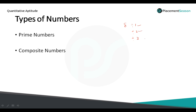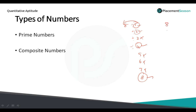So 1 divides 8 perfectly, 2 divides 8 perfectly, but 3 does not divide 8 perfectly. Checking further: 4 divides perfectly, 5 no, 6 no, 7 no, and 8 yes. So if a number divides the given number perfectly, then it is said to be a factor of that number. So the factors of 8 are 1, 2, 4 and 8.